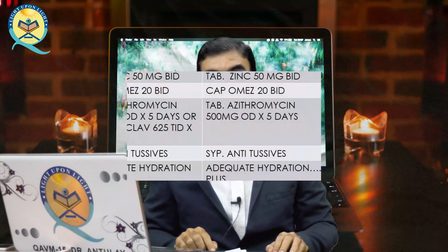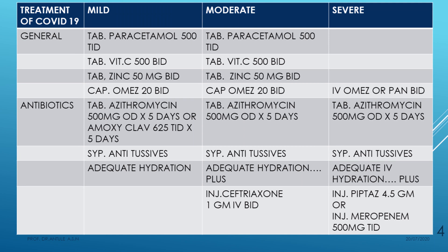General treatment includes paracetamol 500 mg TID, antitussives, vitamin C 500 mg BD or TID, zinc tablet 50 mg BD, and maintaining hydration. These are given in mild, moderate, and severe cases. Omeprazole is given in mild and moderate cases, and IV pantoprazole in severe cases.